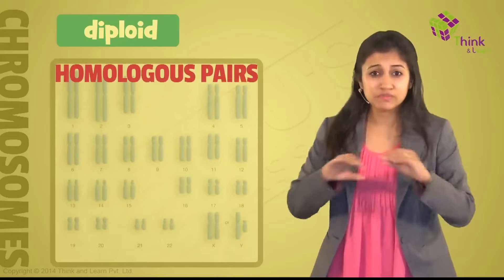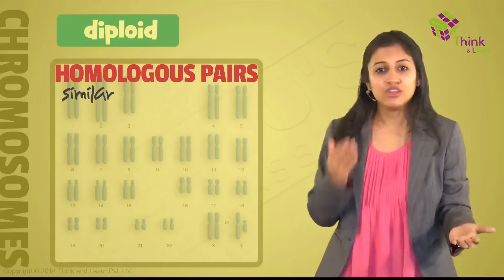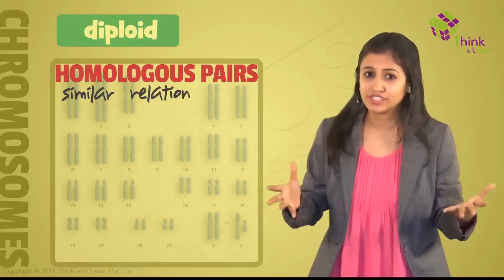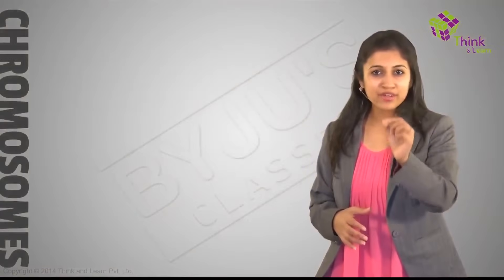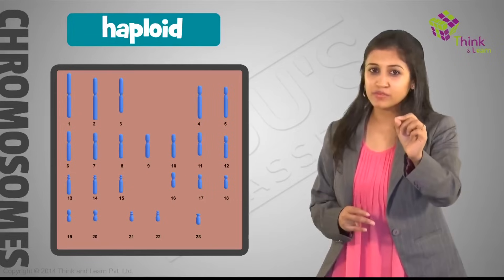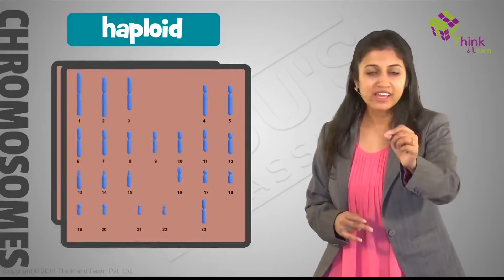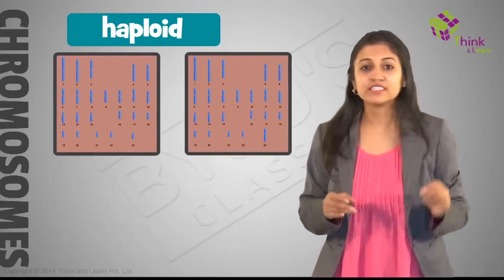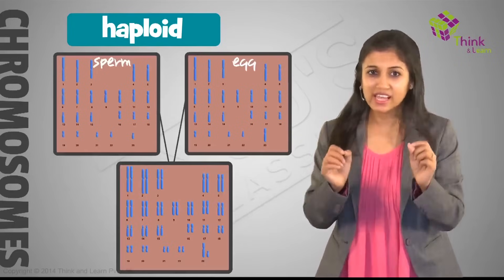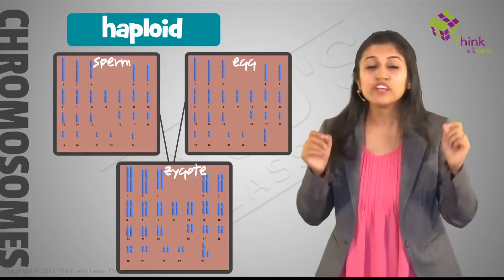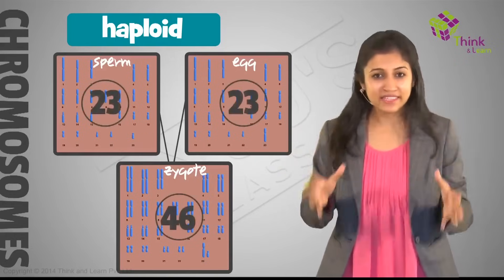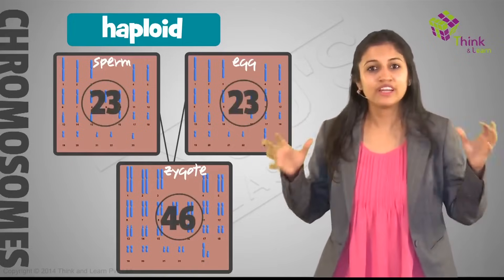Homologous is a simple word. Homo is similar, logo is relation — so same or similar relation. There are only one pair of cells that are haploid — they have exactly half that information. They are found in the sex cells, that is the sperm and the egg. So when they come together, the resulting cell called the zygote gets one full set of 46 chromosomes, and then this keeps on dividing.